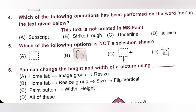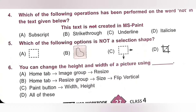Question 5: Which of the following option is not a selection shape? Please pause the video and check options A, B, C, and D. Option D is not a selection shape — it is a crop option, which is not a selection shape. Option D is the correct answer.